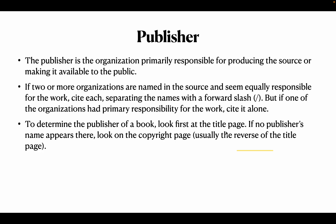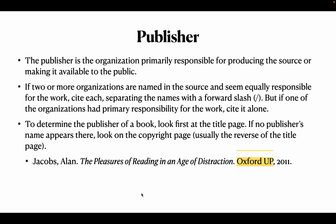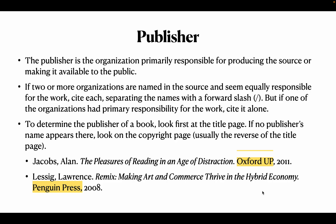To determine the publisher of a book, look first at the title page. All publication details might be there. If not, look at the copyright page, which is usually on the reverse of the title page. For example: Jacobs, Allen, 'The Pleasures of Reading in an Age of Distraction,' Oxford UP, 2011. Or: Lessig, Lawrence, then the book name, then Penguin Press, 2008.